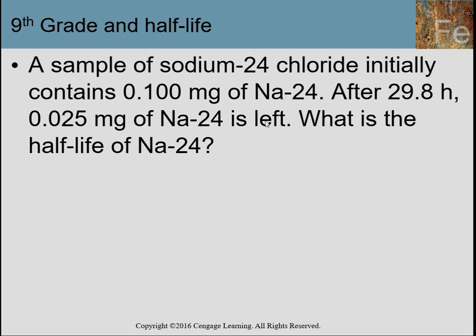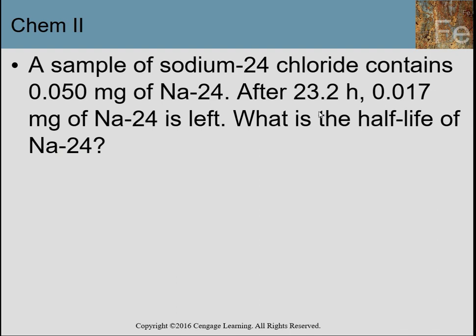In Chem 1, when we discussed half-life it revolved mostly around atoms and their decay, and we kept things pretty simple with exact amounts of half-life. What we're going to do today is look at different types of reactions that aren't as clean, and reactions that don't have very specific time frames associated with the half-life. For example, if you start with 0.50 milligrams and after 23.2 hours have 0.017 milligrams left, there's no easy Chem 1 way to figure out that half-life — but hopefully by the end of this PowerPoint you'll know how to do that.